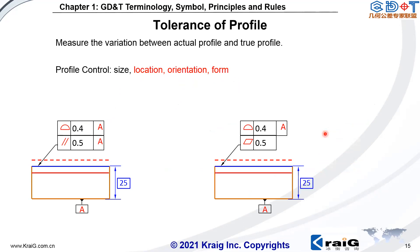We are going to explain the relationship between profile tolerance with datum, parallelism, and flatness. As mentioned, profile tolerance with datum controls orientation, meaning any orientation deviation must be smaller than 0.4. You cannot exceed this tolerance value. So in this drawing, a separate parallelism callout of 0.5 is incorrect — parallelism will never reach 0.5. Similarly, profile tolerance with datum A controls form tolerance; the maximum form deviation is 0.4. Therefore, a separate flatness callout of 0.5 is useless — you will never reach 0.5.